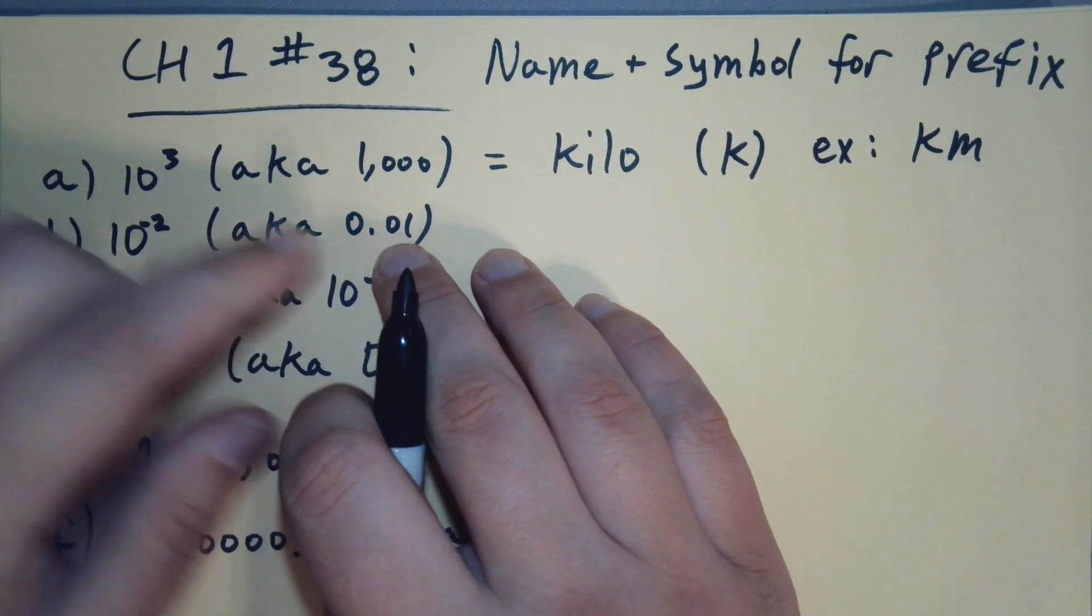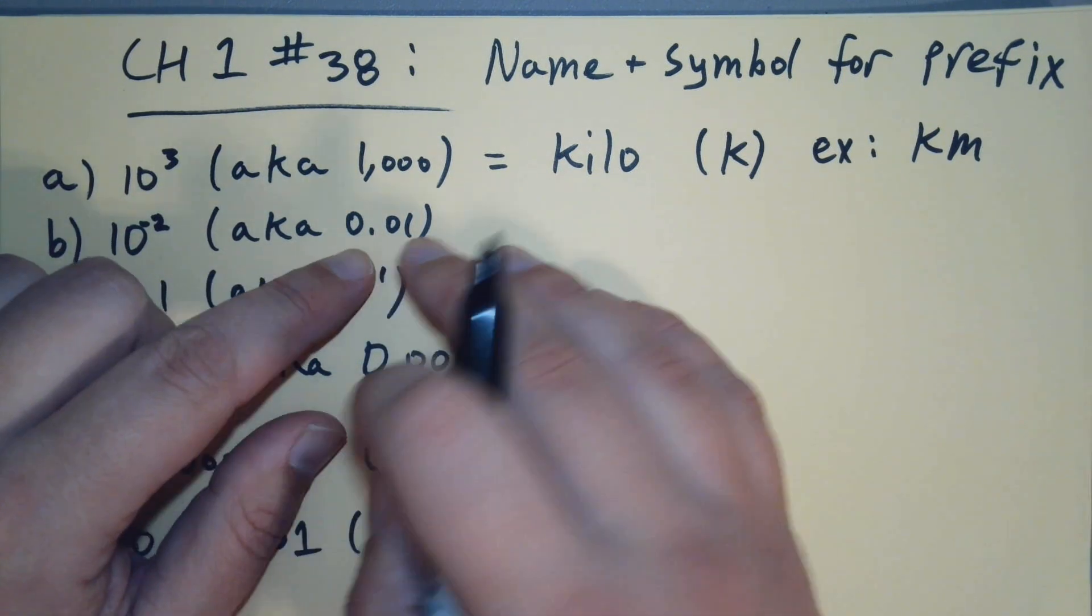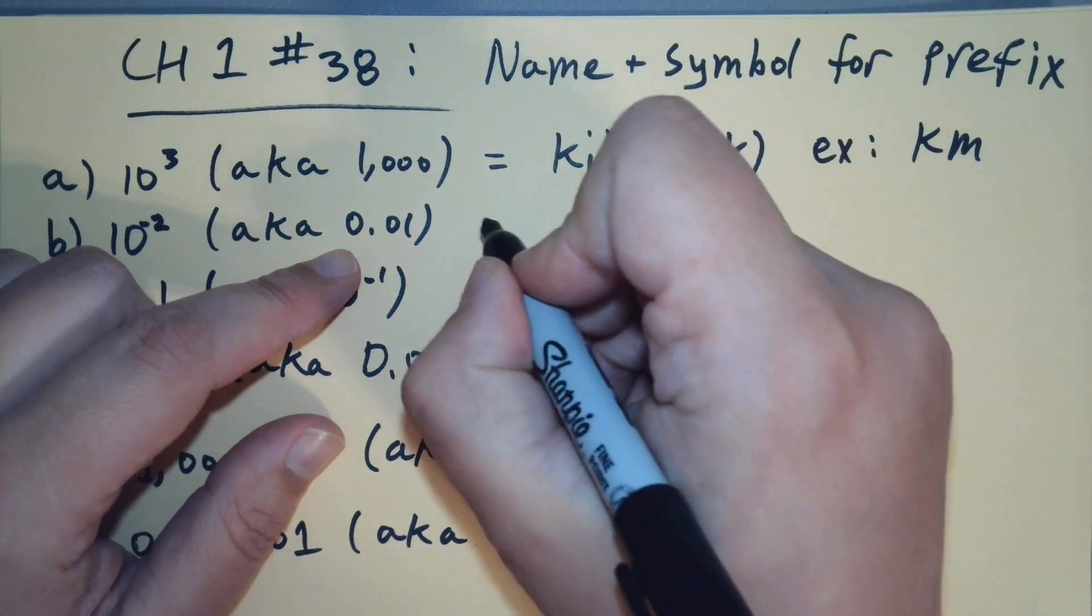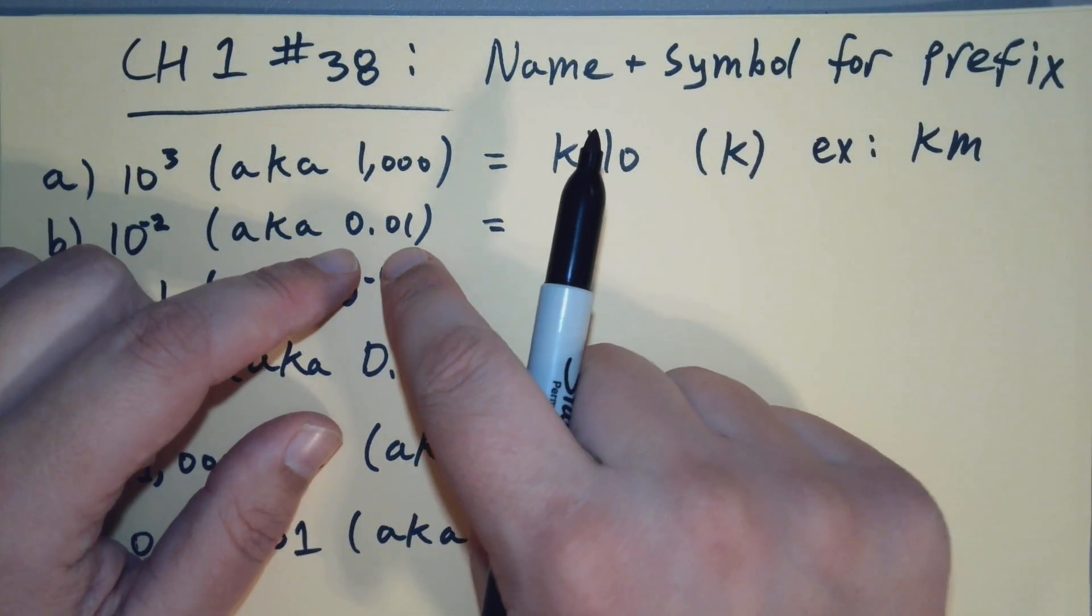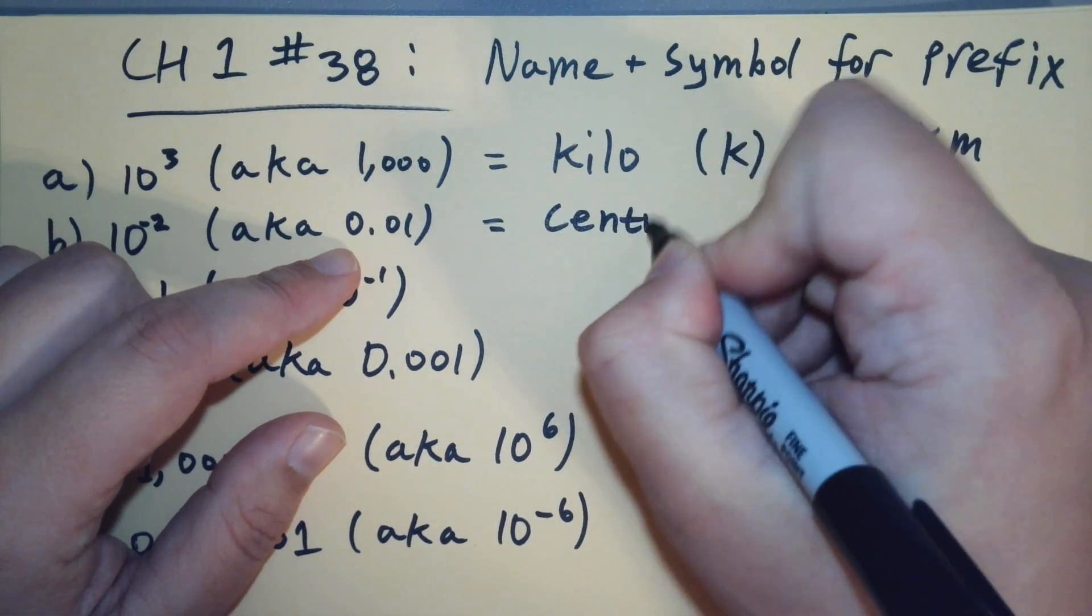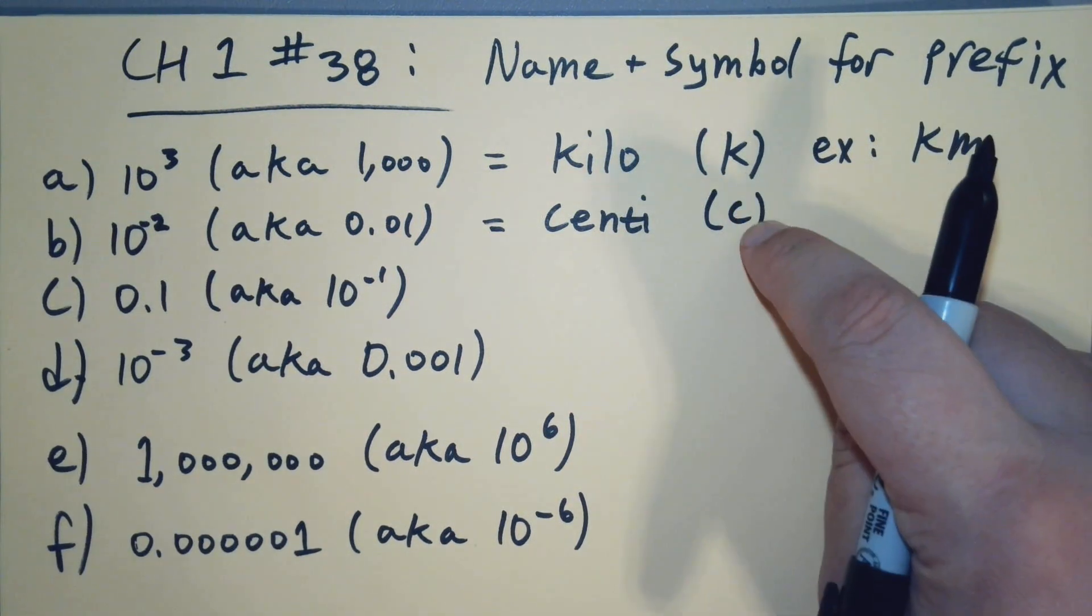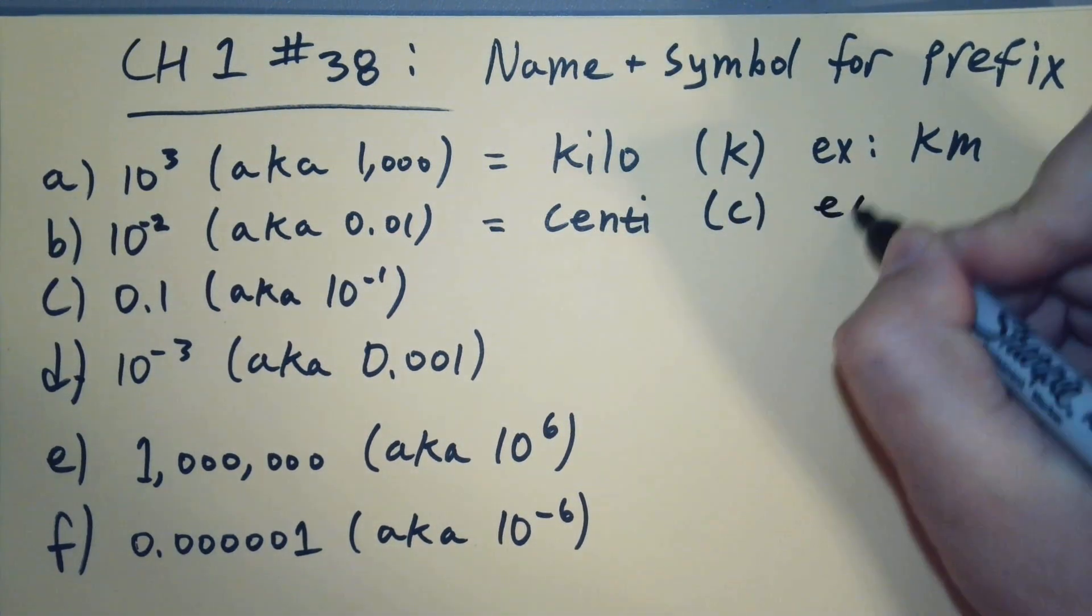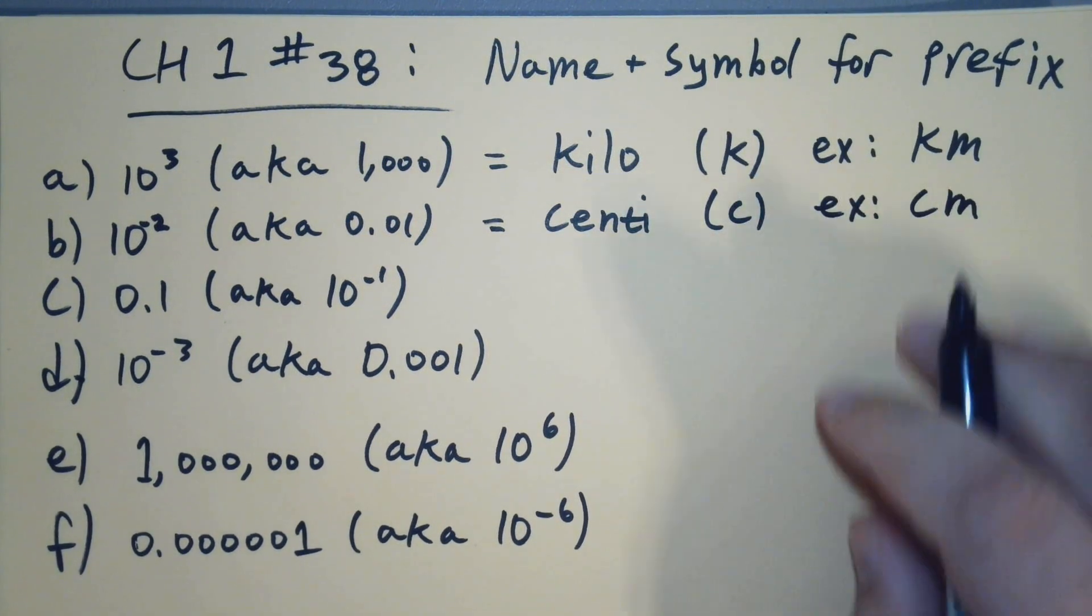If it's 10 to the minus 2, it's 0.01. So now we would need—this is like 1/100—so we would need 100 of this to equal the base unit. If we're sticking with meters, well what's 1/100 of a meter? It's a centimeter. So that would be centi and that's just a lowercase c. That's a lowercase k as well, by the way. So for example, a centimeter—that'd be 1/100 of a meter.